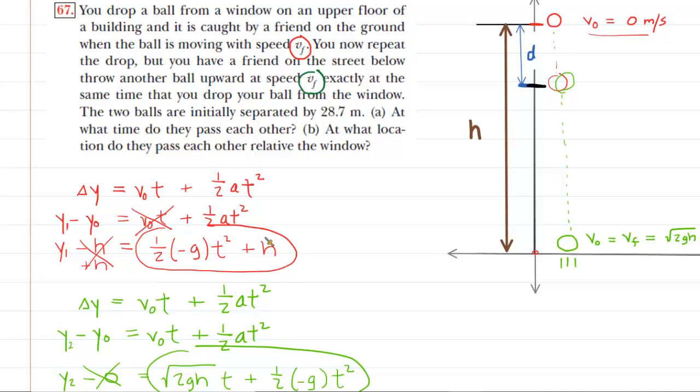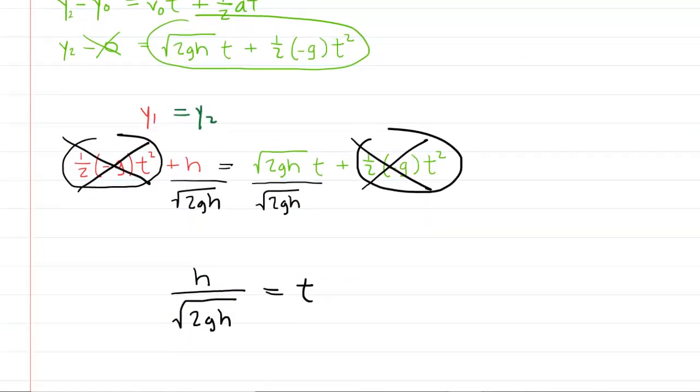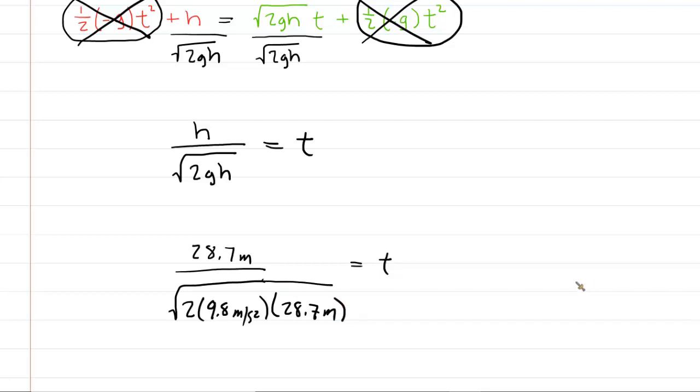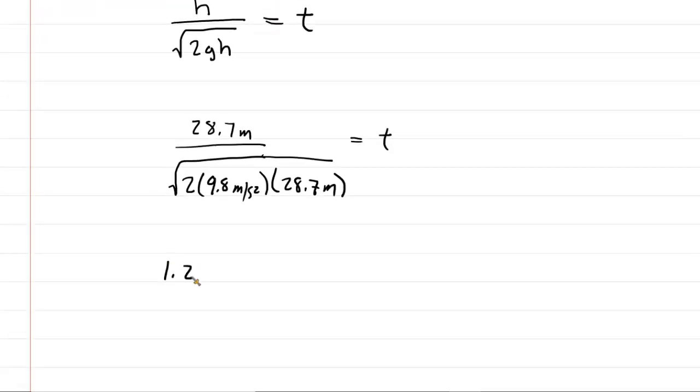The height of the building was 28.7 meters, or at least that was the height of the window. So we're going to fill in 28.7 meters, divided by the square root of 2 times 9.8 meters per second squared, and then again times the height. We will pick up our calculators, and we will carefully punch this in. And when we do so, we should get a time of about 1.21 seconds. So this would indeed be the correct answer to part A.